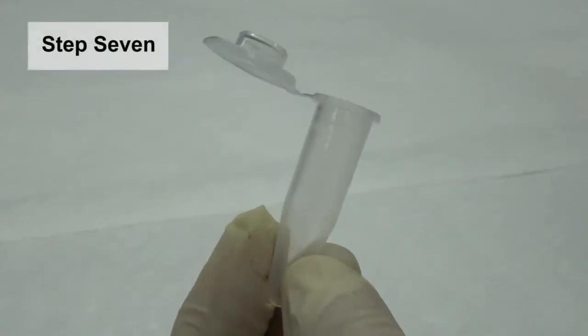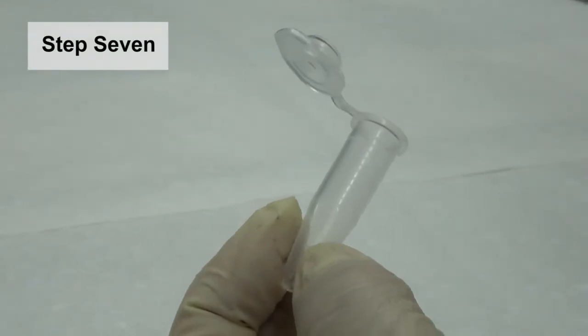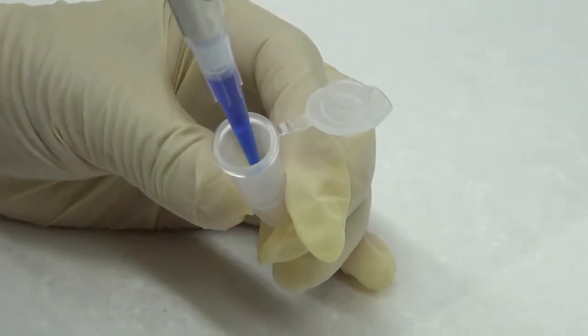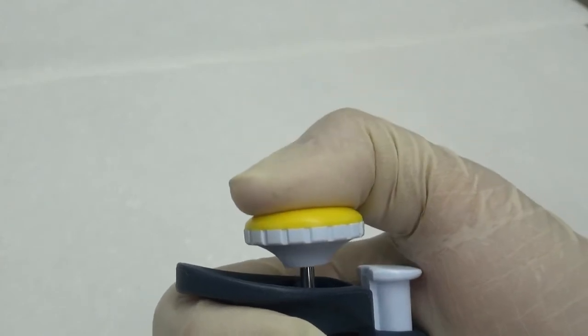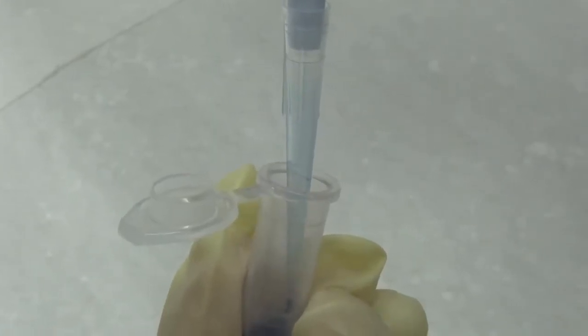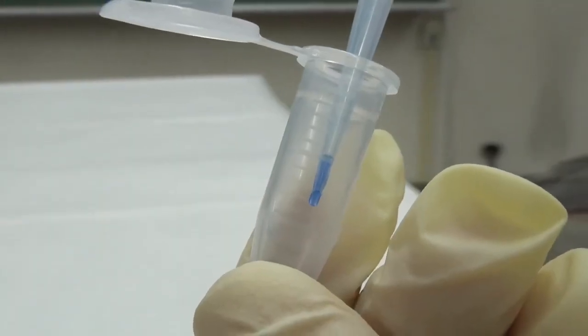Step 7. Slightly tilt the receiving vessel and touch the tip against its inner wall. Gently press the operating button to the first stop and dispense the solution. Some liquid remains in the tip because of adhesion.